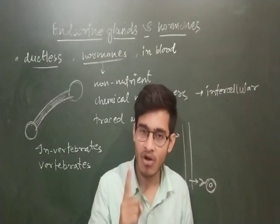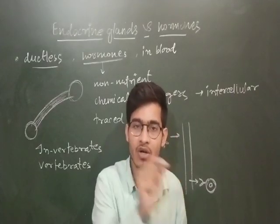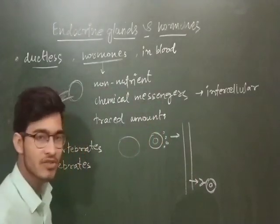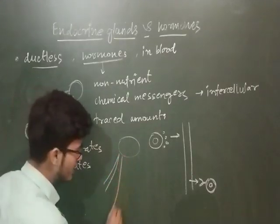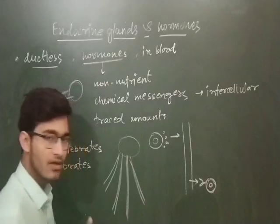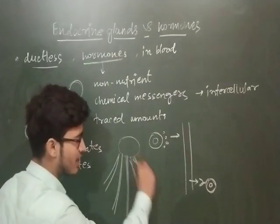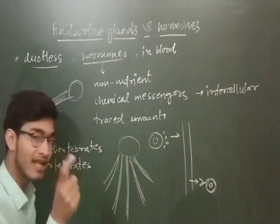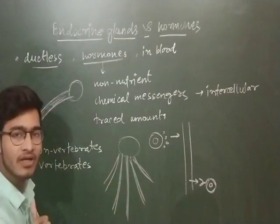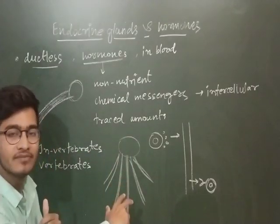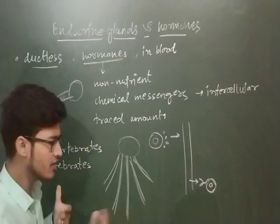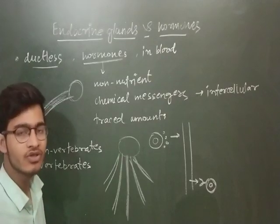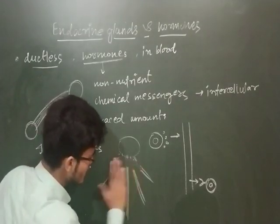If all these things were connected by ducts, our body would become even more complex, because a single hormone affects a lot of organs. For example, the hypothalamus connects to the kidney, liver, pancreas, and all other organs. If a single gland had to send its duct to different organs, our body's physiology would be very difficult to understand. That's why these are ductless glands.